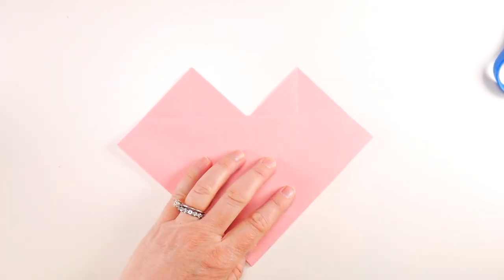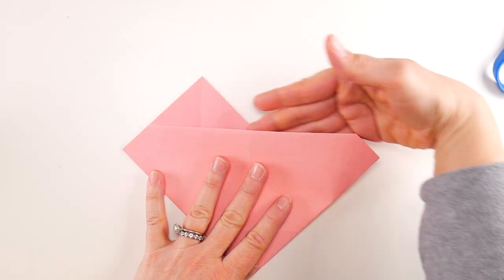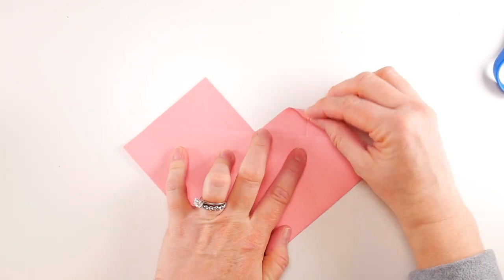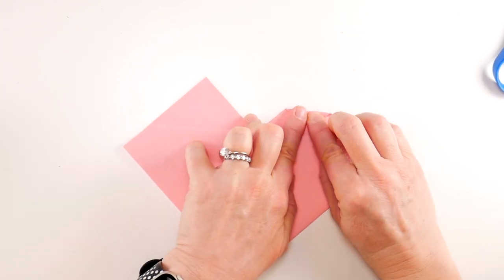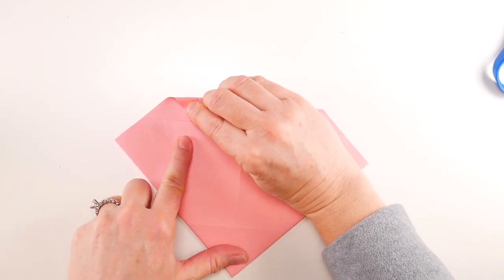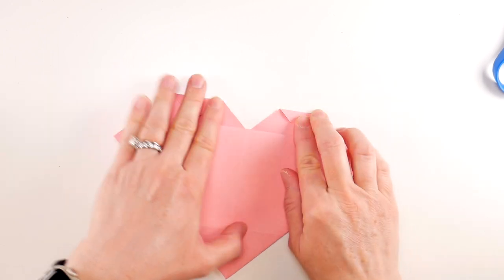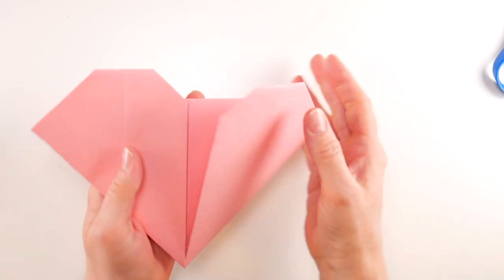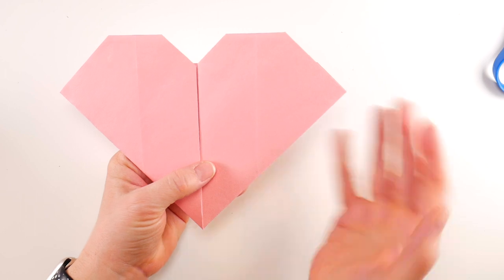See we have a fold up here. You're going to take this point and fold it towards your fold and crease. Now you're going to take this point and fold it towards that fold that goes across and crease. Now flip your heart over and you have a lovely heart.